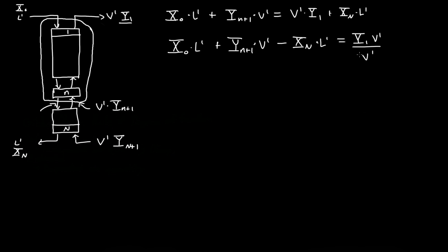So we're going to divide by v prime for each term, and these v's cancel out.